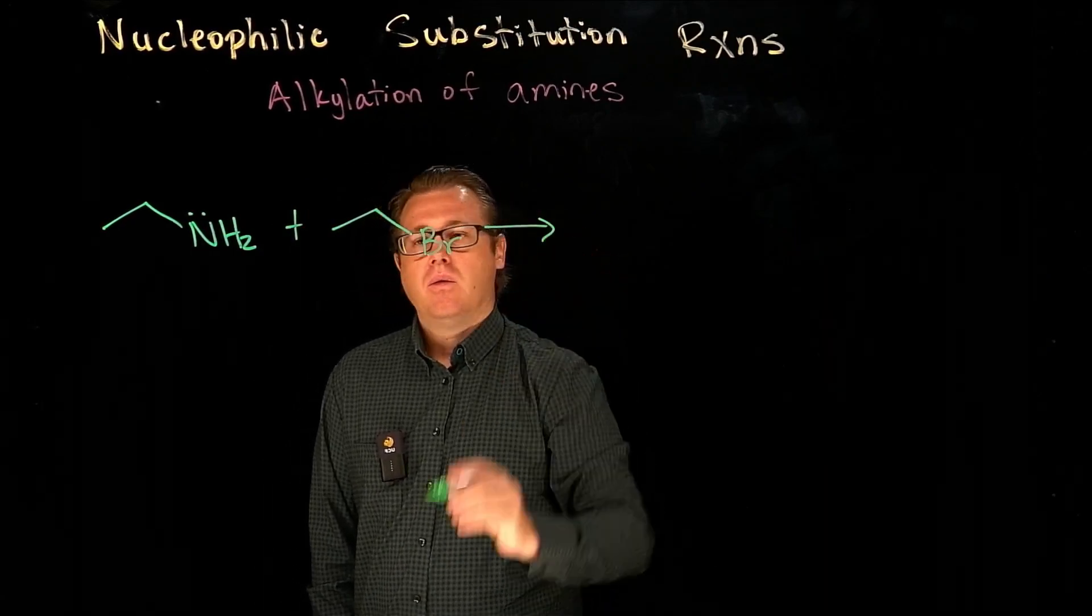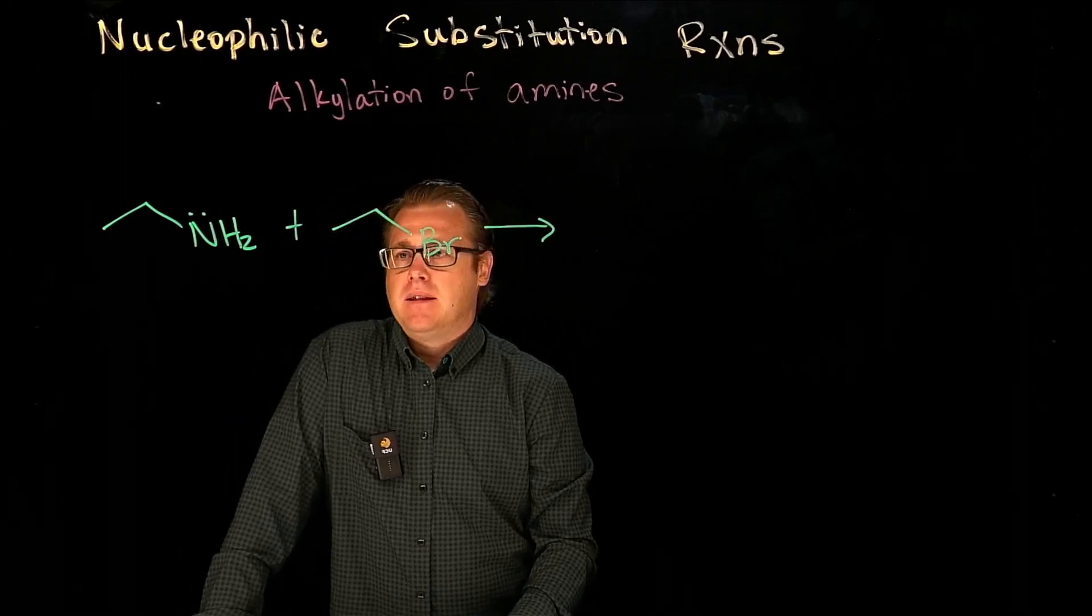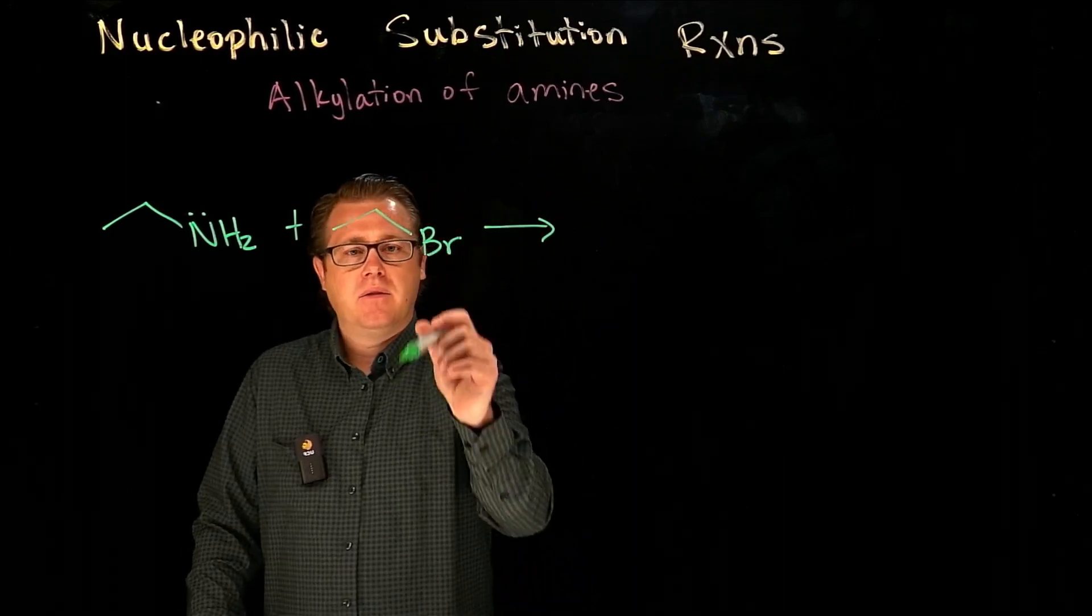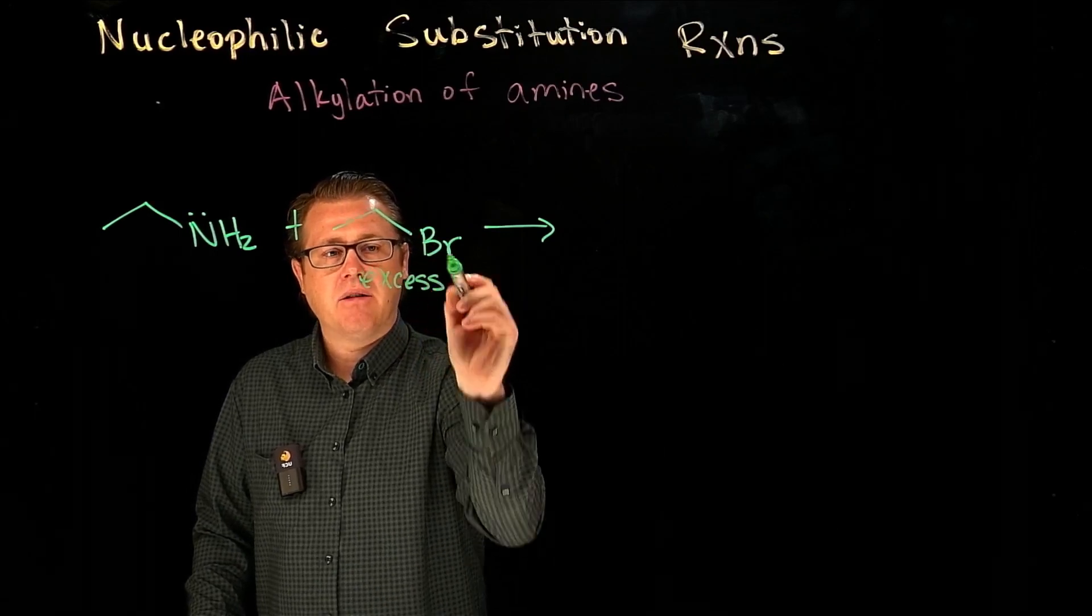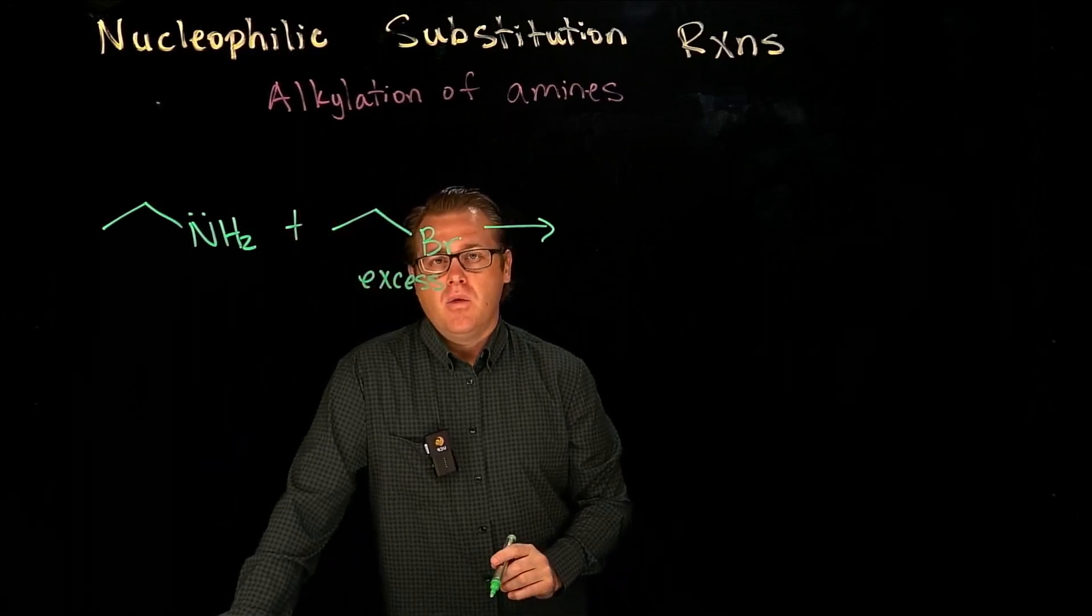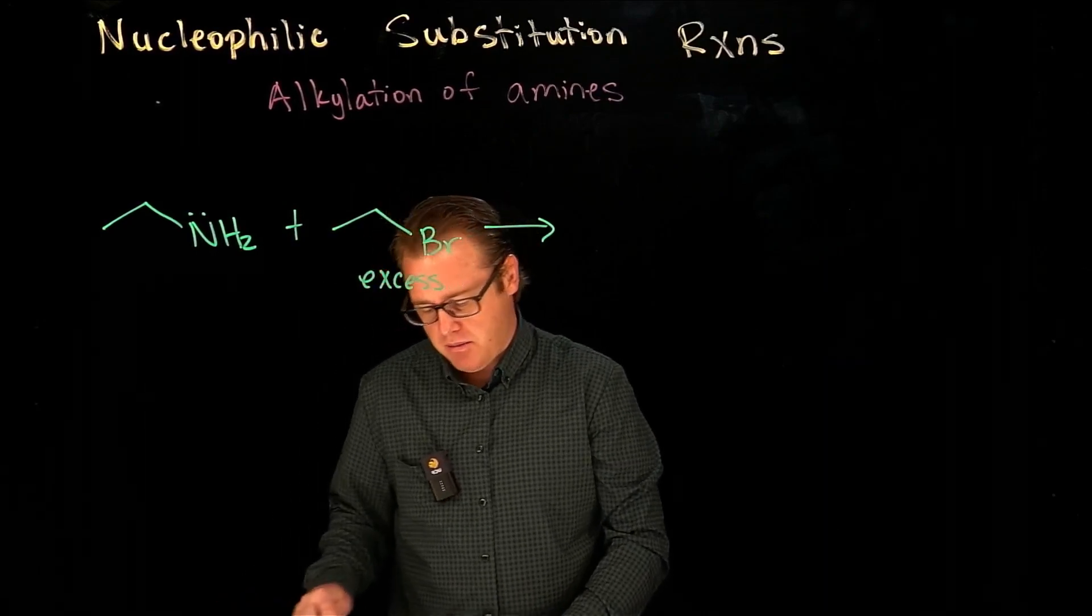And when we take those species here, and let's just say we have a little bit of excess of this, of the alkyl halide, what's going to happen is you're going to form a quaternary ammonium salt.